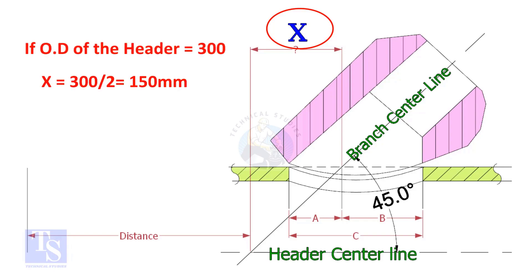Suppose the OD of the header is 400mm, then the value of X will be 200mm.